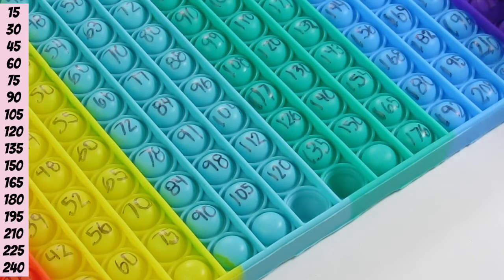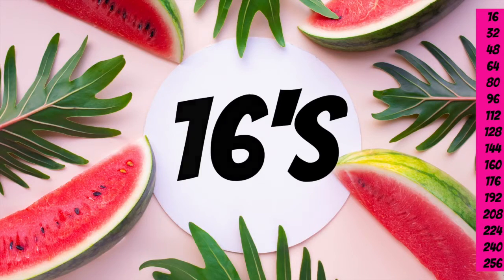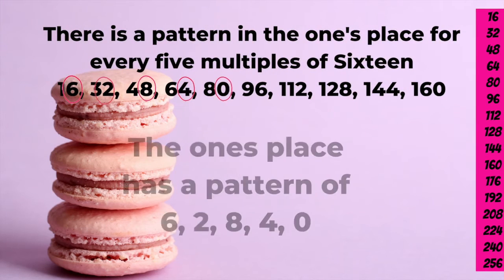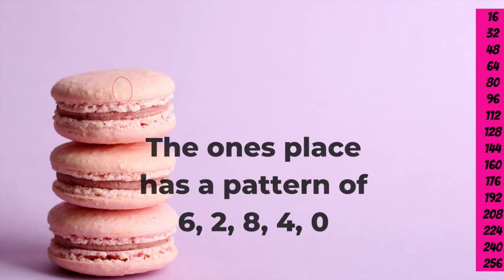Next, we come to 16s. Sweet 16s. Okay, so there is a pattern in the ones column. And the pattern is 6, 2, 8, 4, 0. 6, 2, 8, 4, 0. And that just continues.